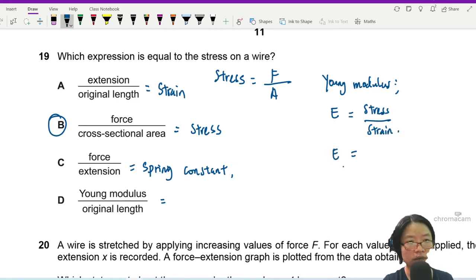So you're going to take the stress, which is F over area, divided by extension over original length. From here, your Young modulus will be F over A times L over e.